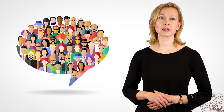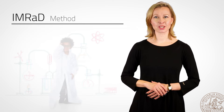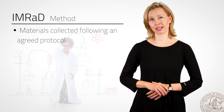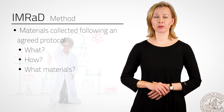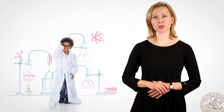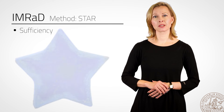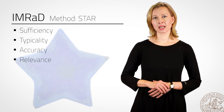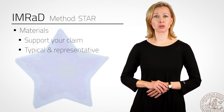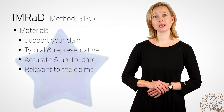The next two parts of the IMRAD essay — the methods part and the results part — are in effect the main body of the paper. The main purpose of the methods section is to convince your target audience that the way you've gone about collecting your results is valid. What did you do? How did you do it? What materials did you use? Did you have any problems, and if so, how did you solve them? It's important to make sure that the materials meet what rhetorician Richard Fulkerson calls the STAR criteria — Sufficiency, Typicality, Accuracy and Relevance. The idea is that you should collect enough materials that are representative, accurate, up-to-date, and relevant to the claims you're making.